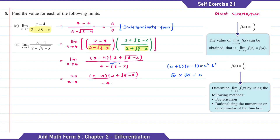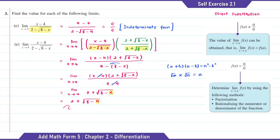So if we arrange this, this is also the same as x minus 4. Then we can cancel the x minus 4. So now we can substitute x with 4. This is equal to 2 plus 2, which is equal to 4.